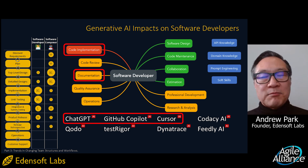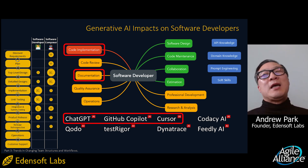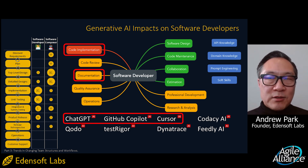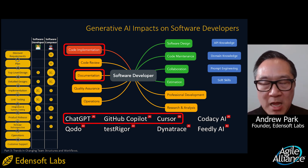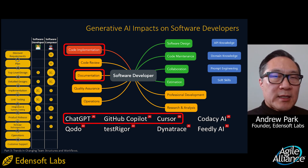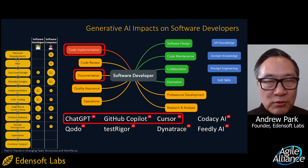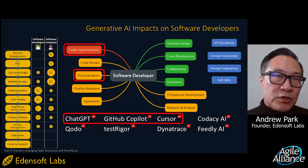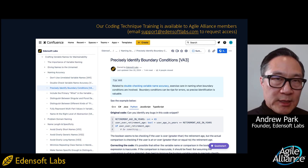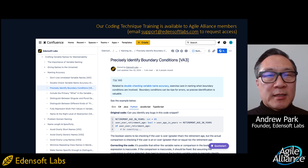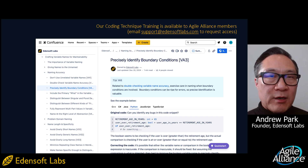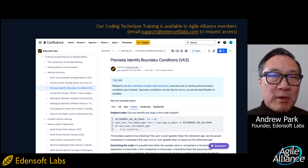We do a lot to train our developers in coding technique because of this. We've always done this and we have not stopped. The rise of generative AI has not taken away the need to do that — it's actually almost increased it, because there's more code to maintain now. One of the things we have available just recently is coding technique training that we've developed in-house, which is more extensive than the resources that are publicly available.